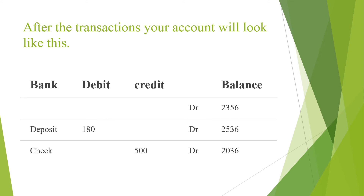Then you issued a check of $500, which decreases the amount. Anything that decreases the asset account is credited, so this amount goes on the credit side and the new balance is $2,036. When crediting you subtract from the balance because the money is going out of the bank, decreasing the asset account. When depositing, the money is coming in and increasing the asset account, so you debit it.